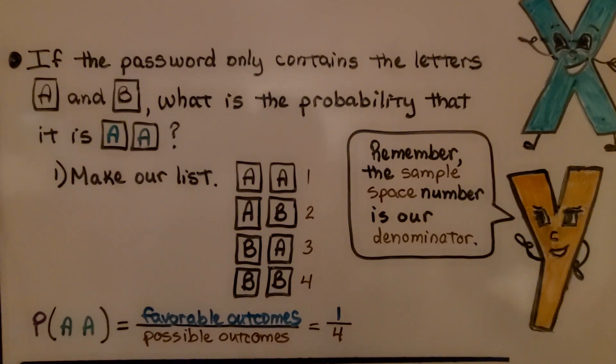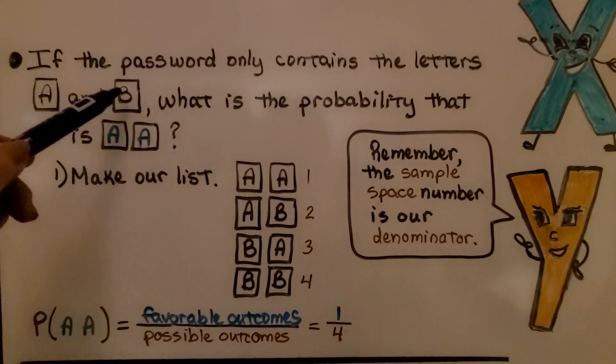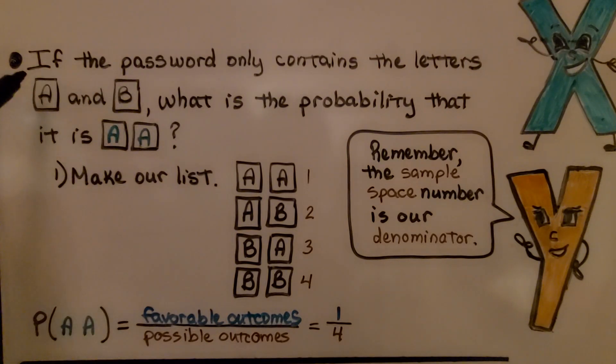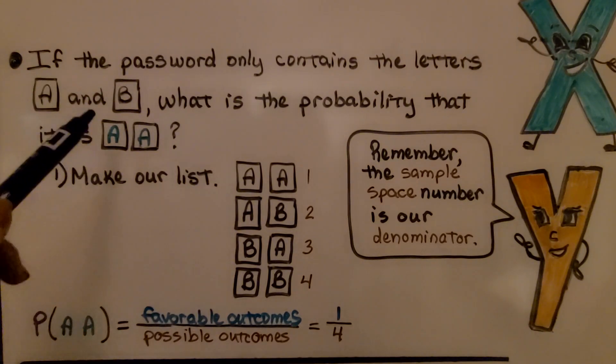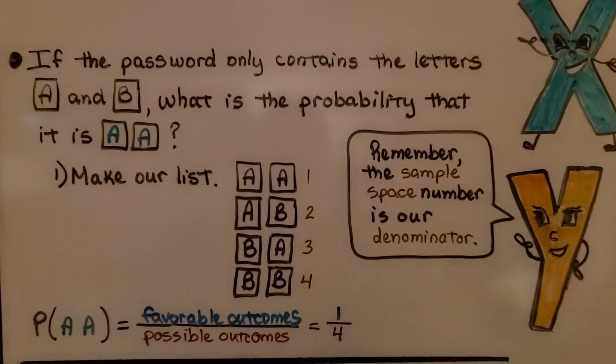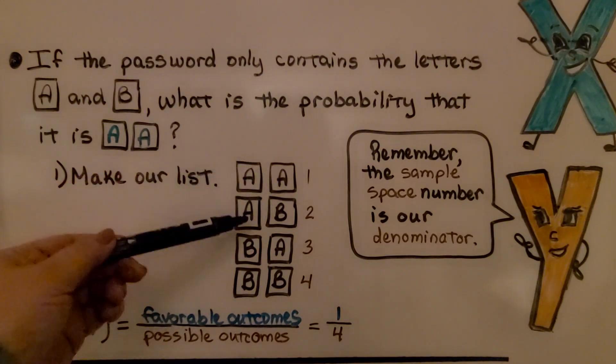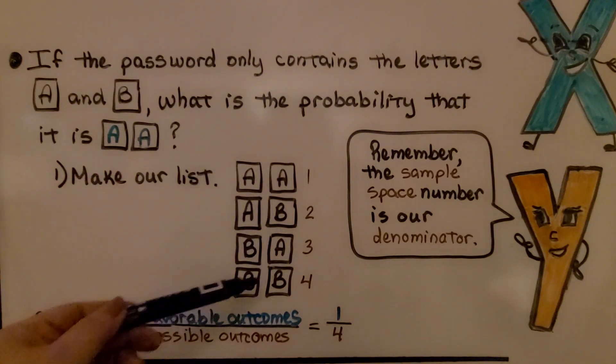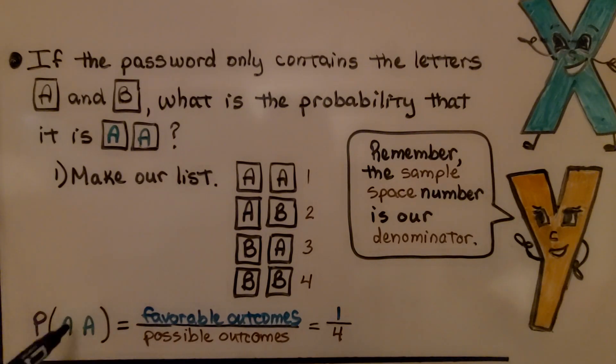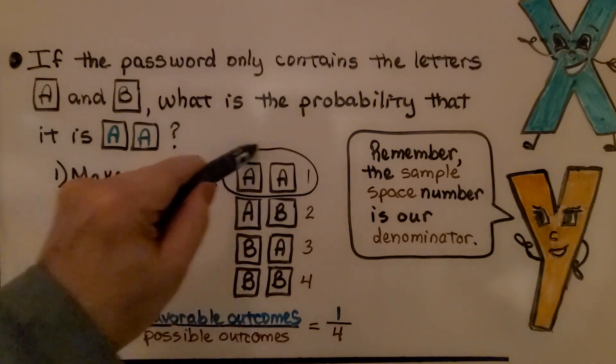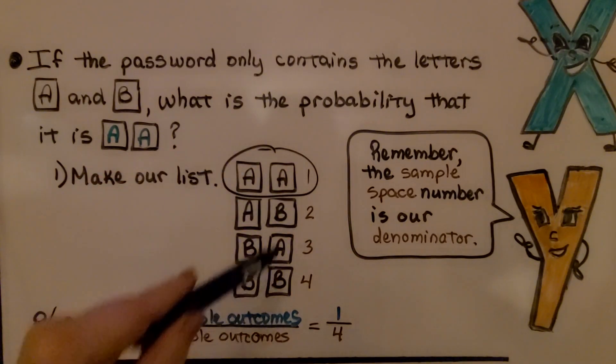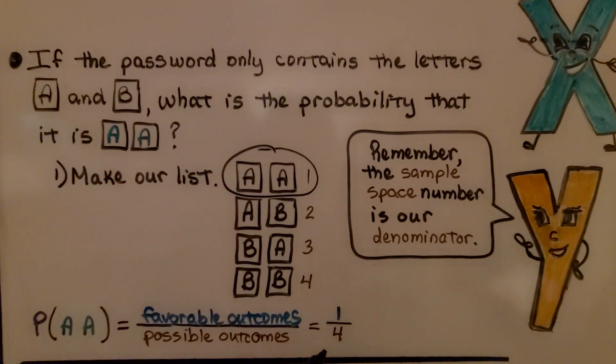If the password only contains the letters A and B, it's a two-letter password, what is the probability that it's A-A? We make our list. We have A-A, A-B, B-A, B-B. The probability that it's A-A is the favorable outcomes, there's only one, over the possible outcomes. There's four. It would be one-fourth. So, remember, the sample space, this four, this sample space number, is our denominator.